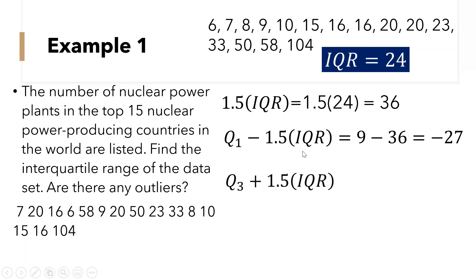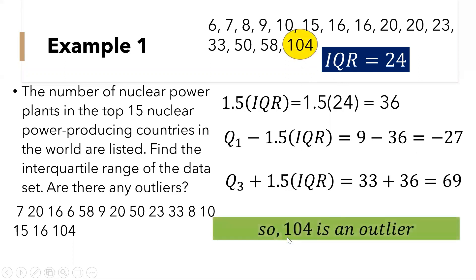So the next step that we need to do is to add this 36 to quartile 3. So quartile 3 is 33 plus 36 is equal to 69. Any data entry greater than 69 is an outlier. So we have data which is greater than 69, that is 104, meaning 104 is an outlier.